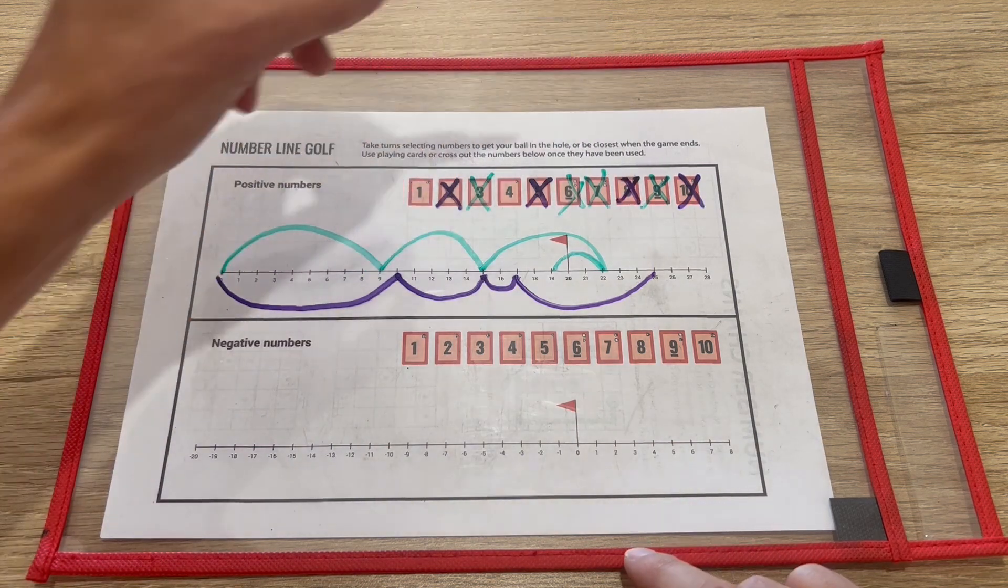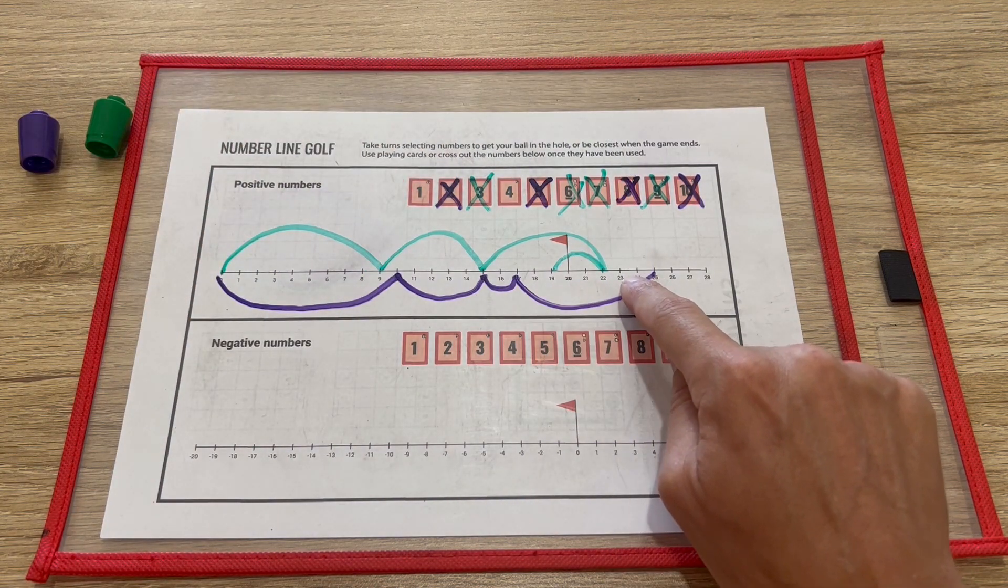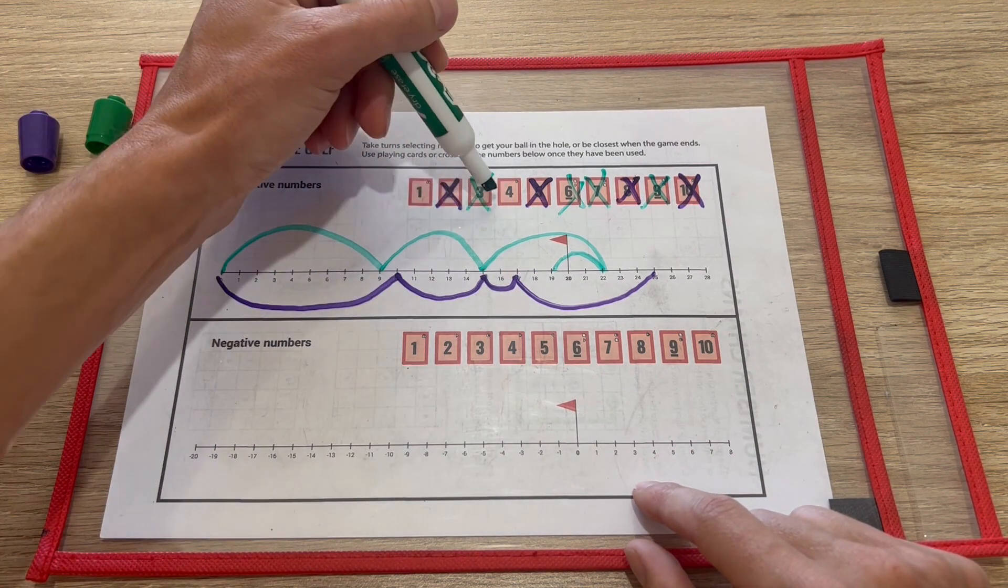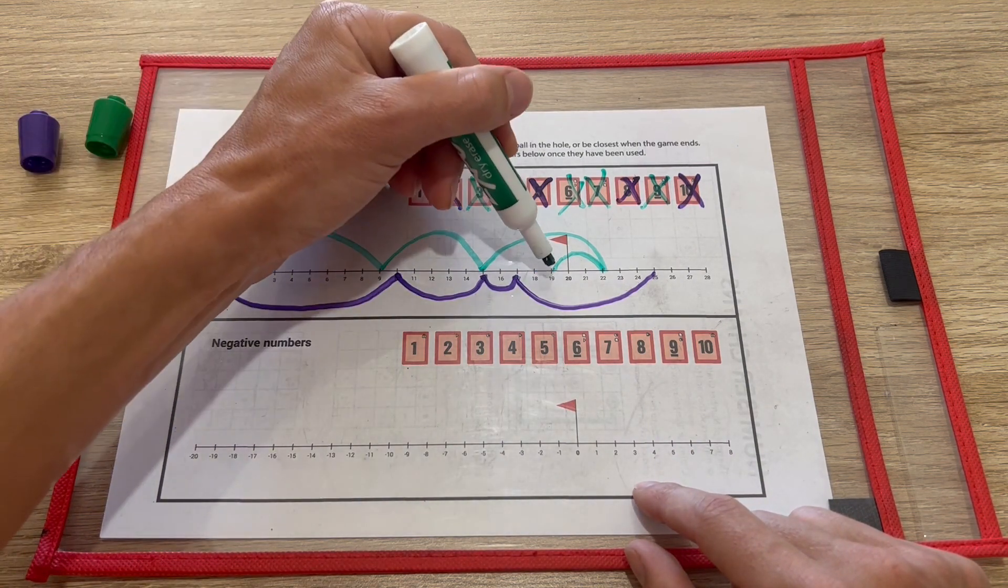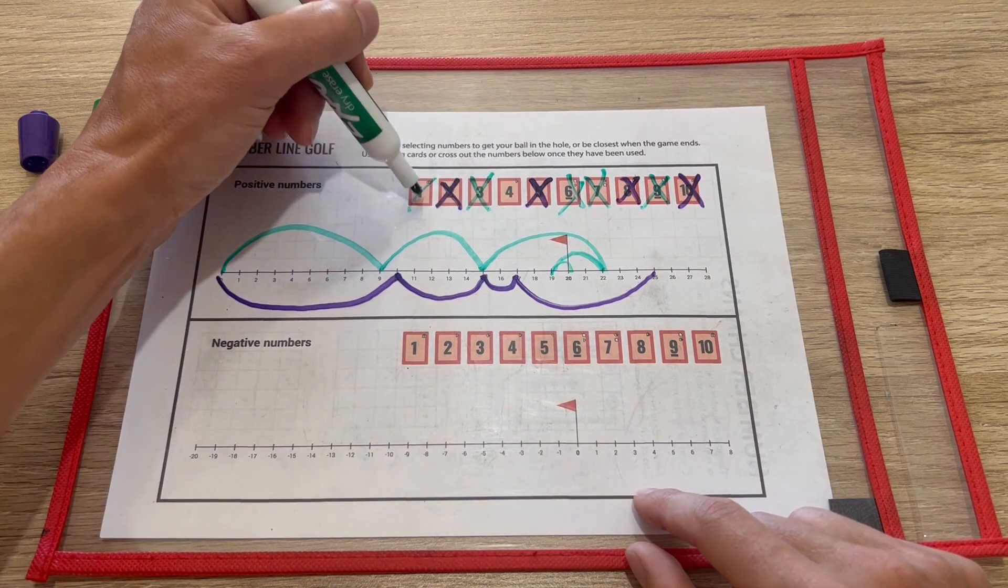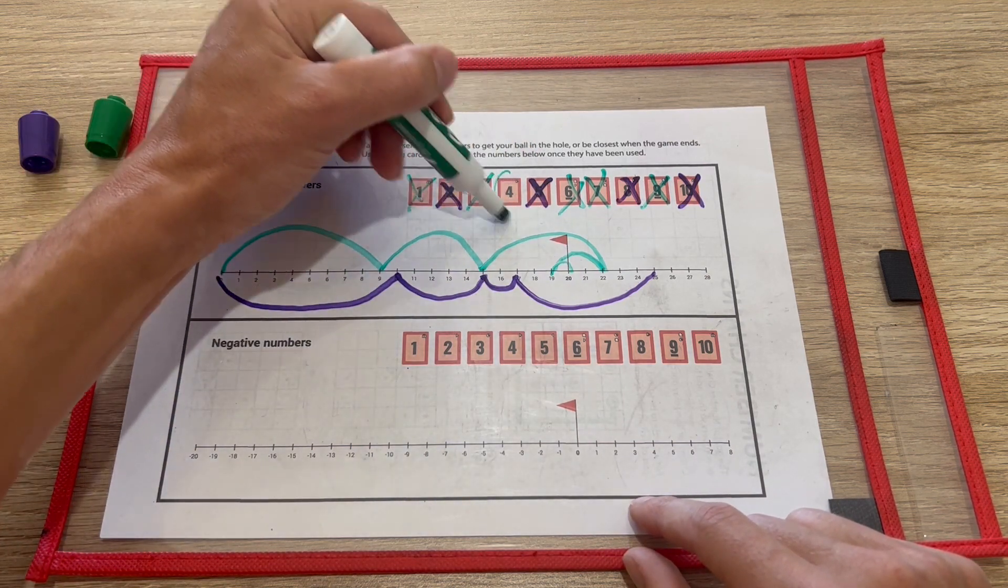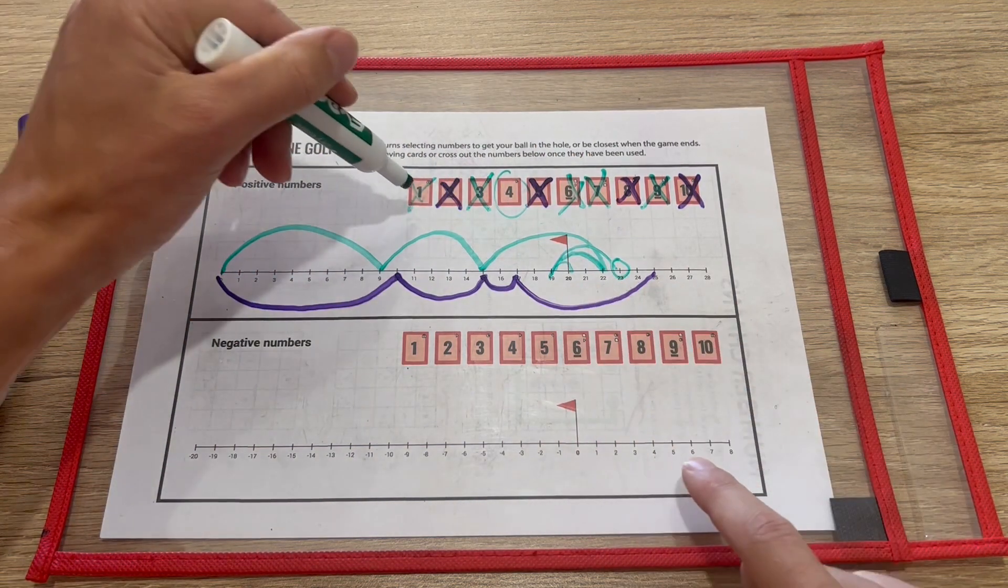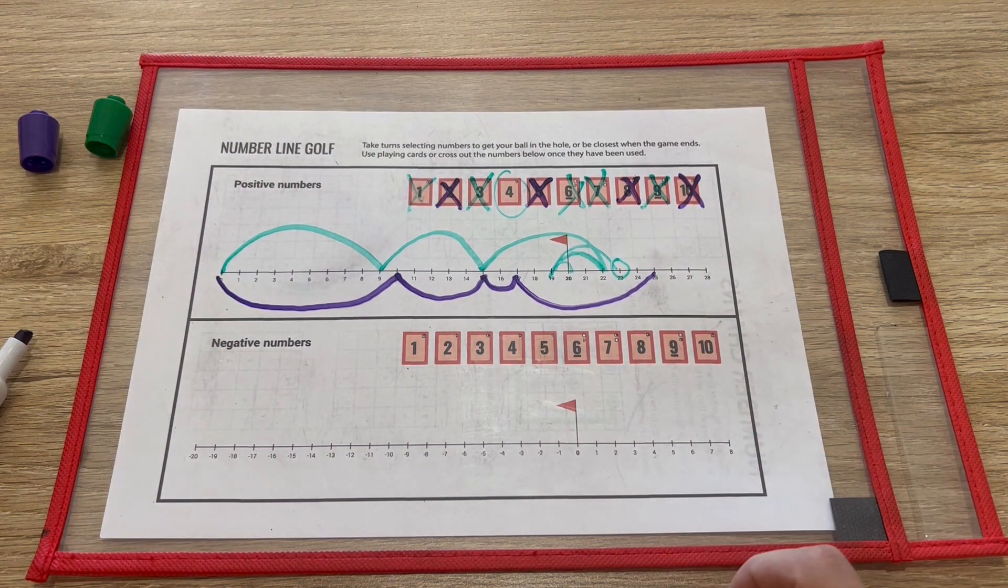And now green's got a decision whether they pick a 4 and go to 23. And that'll win them the game, so they'll do that. Actually they can just win with a 1, so they'll just take the 1 and win the game. But they could also have won by taking the 4 and going past the hole to here, and then the 1 would have been the only card left for purple, which would have ended them on 24.